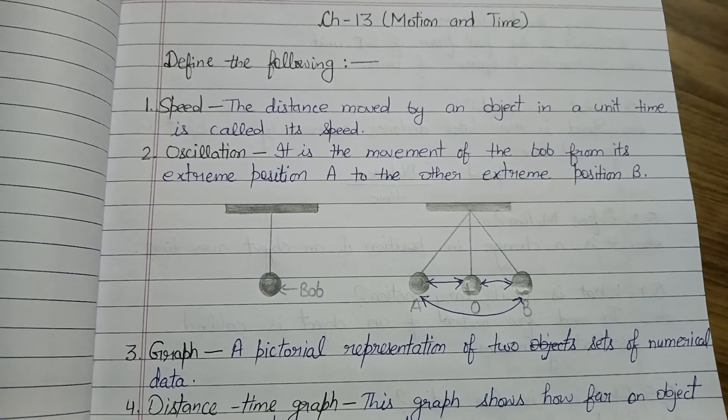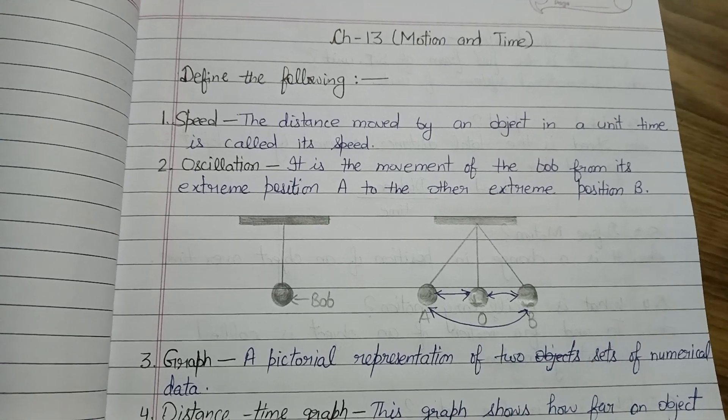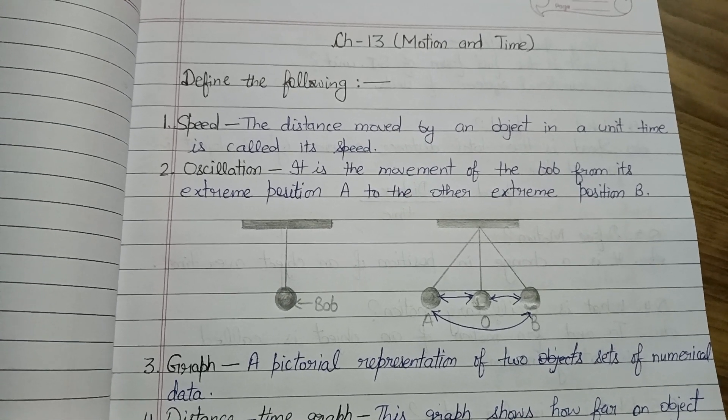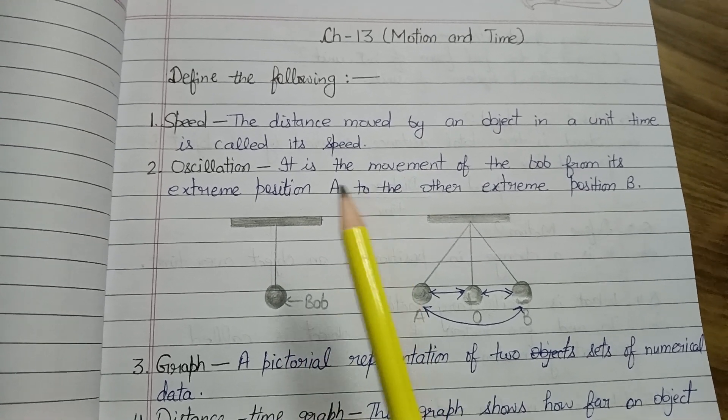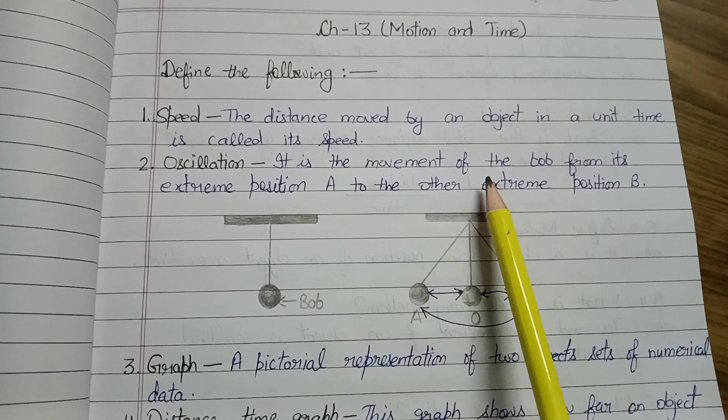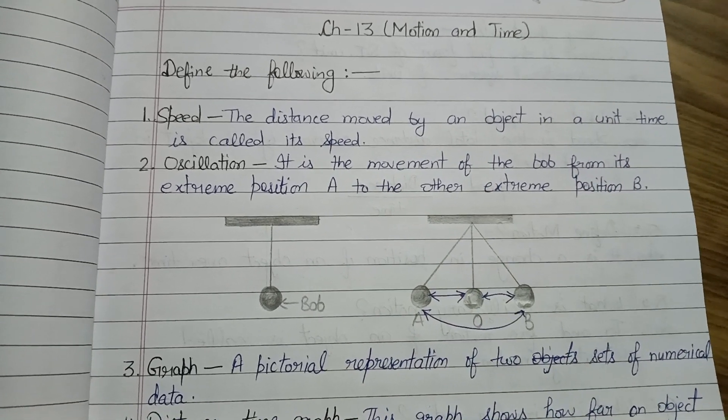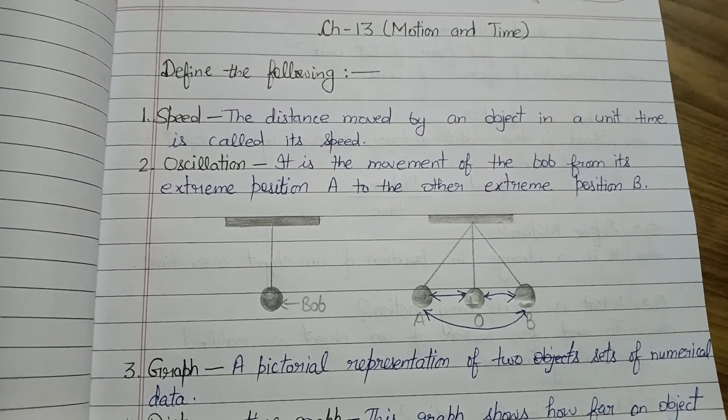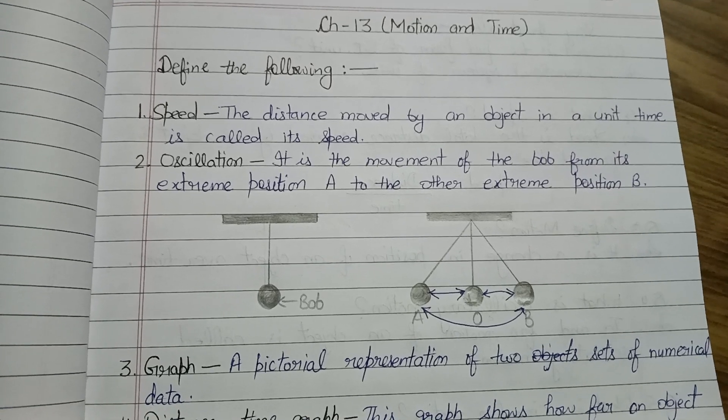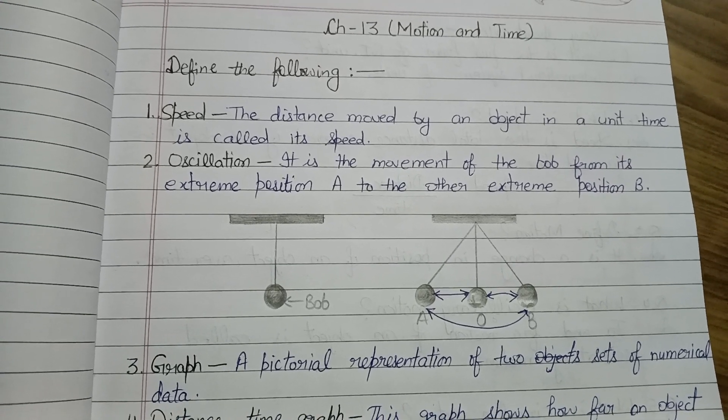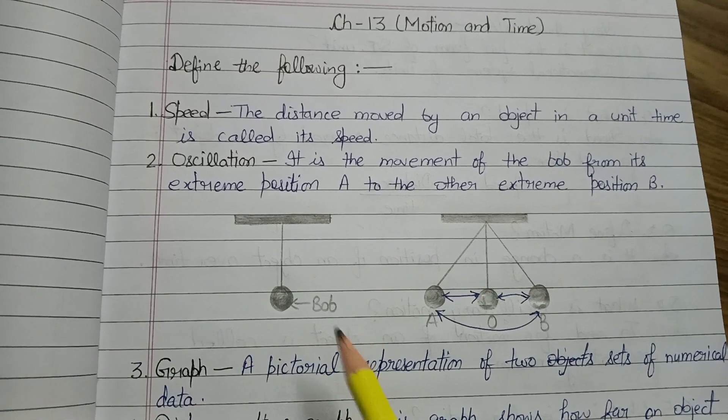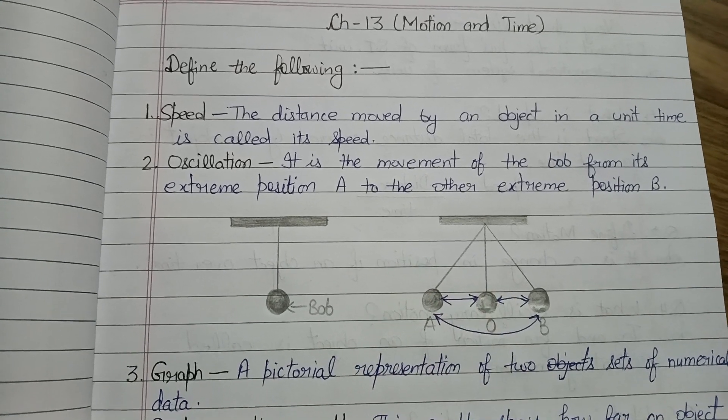Good morning, dear students. Today we will do Chapter 13: Motion and Time. Define the following. First one is speed - the distance moved by an object in a unit time. Jab given time mein koi bhi object move karta hai kuch distance ko, us ko hum kya bolte hai, speed.